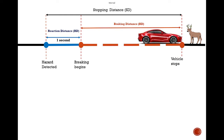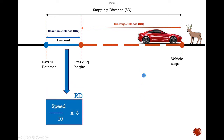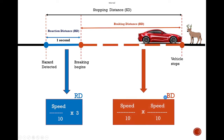You will get questions in your exam to calculate reaction distance, braking distance, or stopping distance. These are supported by mathematical formulas. To calculate reaction distance: one-tenth of the speed times 3. One-tenth of the speed times one-tenth of the speed gives you braking distance. Stopping distance is simply reaction distance plus braking distance.